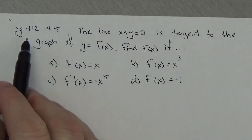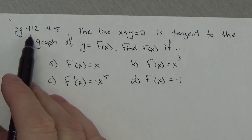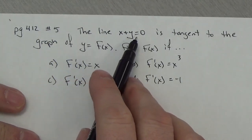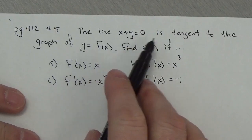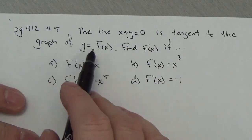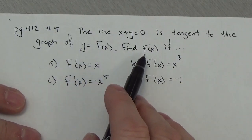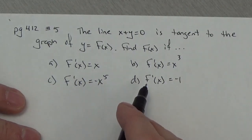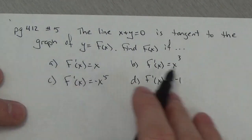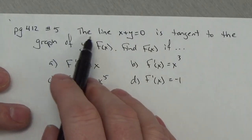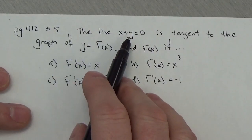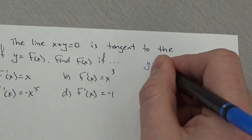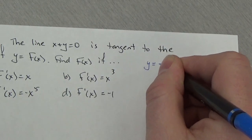Let's take a quick look at this. This is from page 412, number five. It says the line x plus y equals zero is tangent to the graph of y equals F of x, and we want to find F of x given a series of derivatives. Notice that the line x plus y equals zero means we're looking at the line y equals negative x — that's our tangent line.